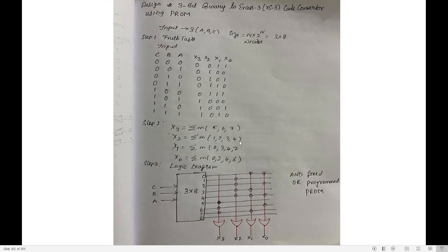Now for X2, the terms are 1, 2, 3, 4. At the intersection of the OR gate and decoder for X2, place a circle indicating connections at positions 1, 2, 3, and 4. X1 has terms 0, 3, 4, 7 — place a dot at each of those positions. X0 has terms 0, 2, 4, 6 — connect those positions to X0.